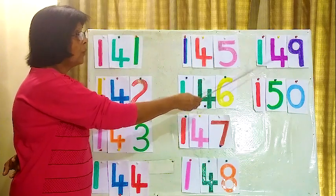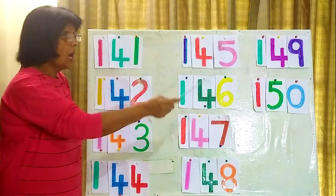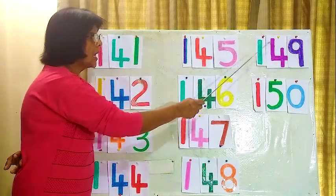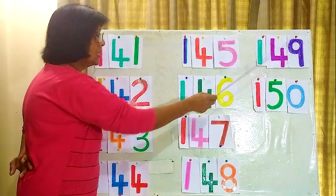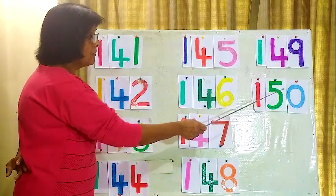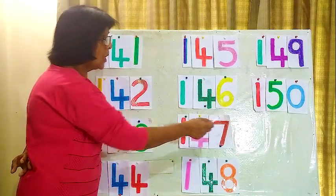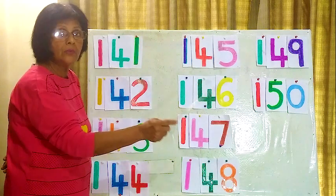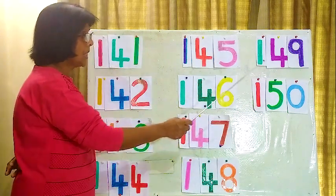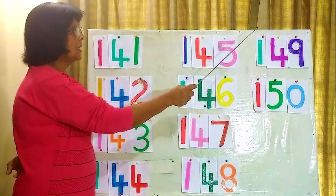Now you can read like this: 141, 142, 143, 144. Again we will read 141, 142, 143, 144.